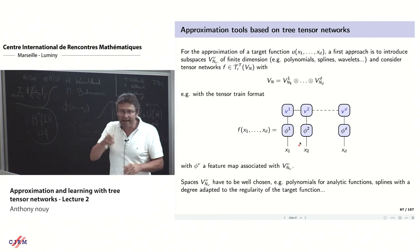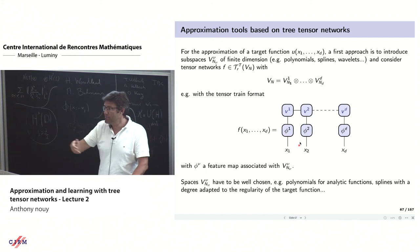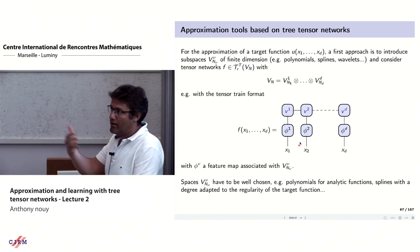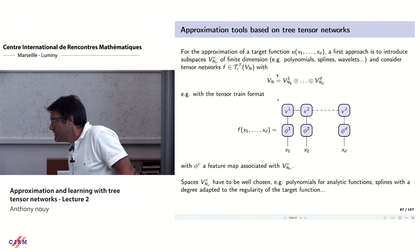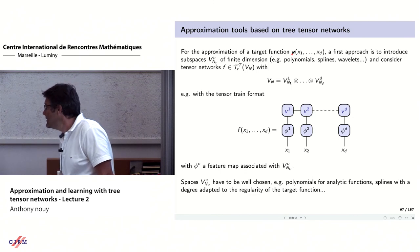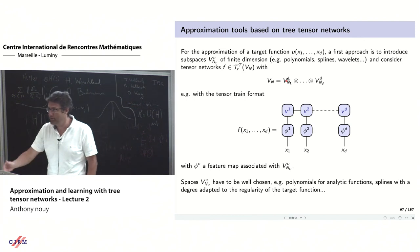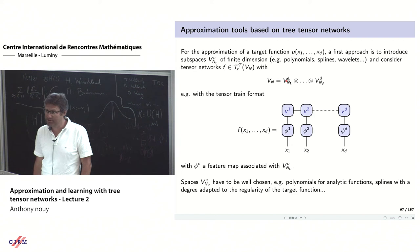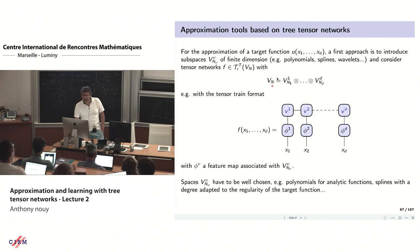The collection of tensors v1 to vd is the representation of the tensor of coefficients of functions in the product basis associated with this tensor product space. This is a classical way to define approximation tools using low-rank formats. You introduce a basis of univariate functions and consider low-rank approximation — selecting the function spaces for different variables based on knowledge of your function, such as polynomial spaces for analytic functions or wavelets and splines for Sobolev-type functions.